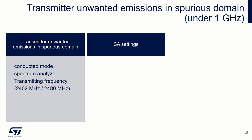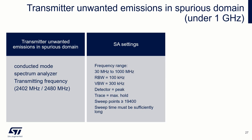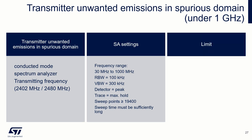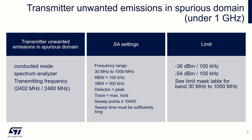Starting with the lower band, we perform measurements on two channels. Set start frequency to 30 MHz and stop frequency to 1 GHz. Set resolution bandwidth to 100 kHz and view bandwidth to 300 kHz. Set detector to peak and trace to max hold; sweep points should be larger than 19,400. After the signal has stabilized, place markers on all spectral lines that exceed or are close to the limit.